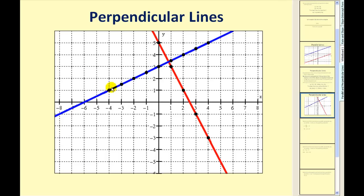If I ask you to find the slope of the blue line, picking these two points, if I go up 1 and right 2, the slope of the blue line is positive 1/2. If we find the slope of the red line using these two points, we would go down 2 and right 1, giving us a slope of negative 2 over 1. These are negative reciprocals of one another — you flip it over and change the sign. Therefore, they must be perpendicular lines, or intersect at a right angle.